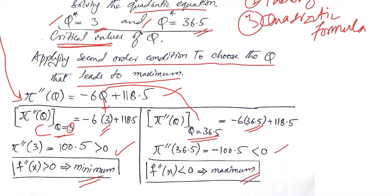This should not be a surprise because you already know how these conditions work. A positive second order derivative leads to a minimum, and a negative second order derivative leads to a maximum.